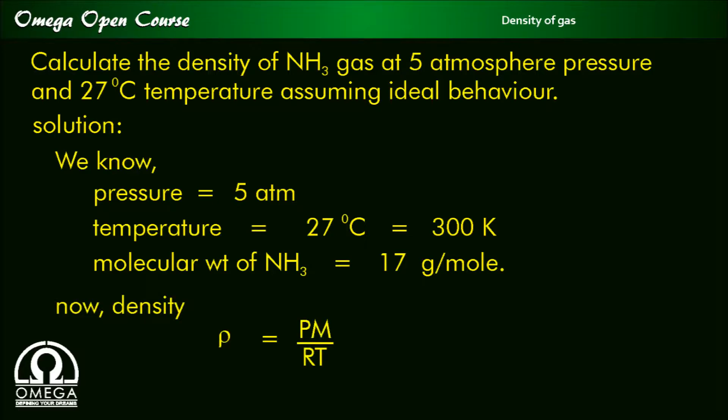Now density ρ is equal to PM by RT, which equals 5 into 17 by 0.082 into 300, which is equal to 3.45 grams per liter, and this is our answer.